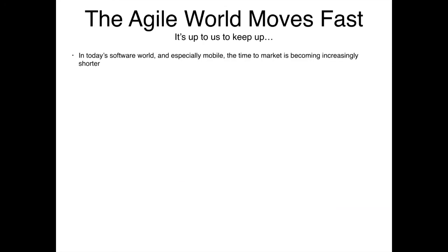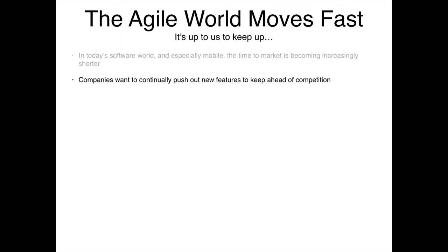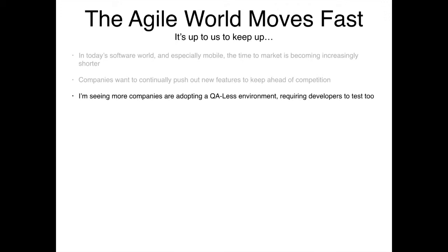The agile world moves fast and it's up to us to keep up. In today's software world, especially on the mobile side, the time to market is increasingly shorter. When I first started my career before agile existed, it was normal to have two or three month iterations, but nowadays you're lucky to get one or two weeks. Companies want to continually push out new features, and many are going with QA-less environments, requiring developers to test as well — and in my opinion, those are two different skill sets.